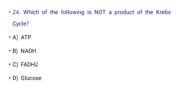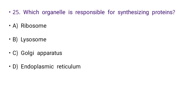Next: Which of the following is not a product of the Krebs cycle? Options: ATP, NADH, FADH2, or glucose. The right answer is D: glucose.